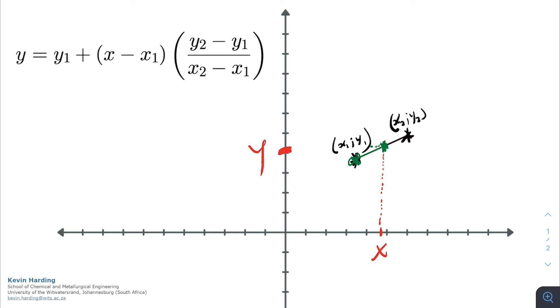...y2 minus y1 divided by x2 minus x1. So that we now have our neat formula for y, our unknown, equal to y1 plus x which is our given value minus x1 multiplied by y2 minus y1, x2 minus x1, which are both values on either end of our interpolation value.